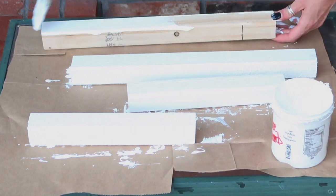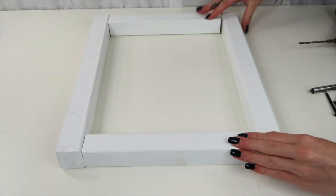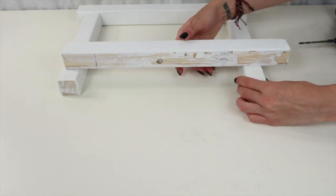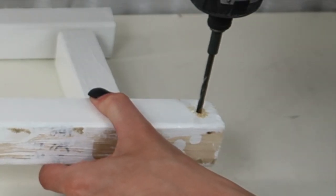And the next day once they dried this is how they looked. Now we're just going to screw the frame together on the top and the bottom. I'm going to take the first board flip it on its side and I'm going to pre-drill it just to make it easier to drill the screws in.